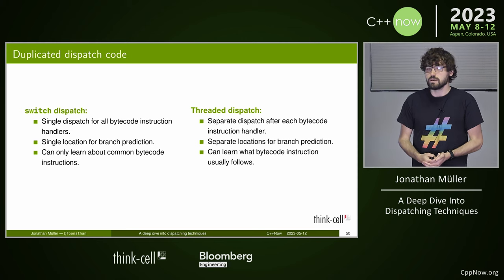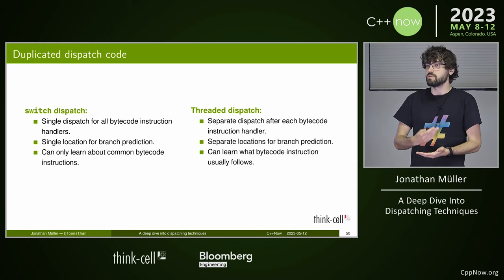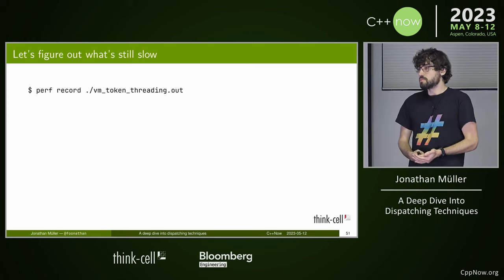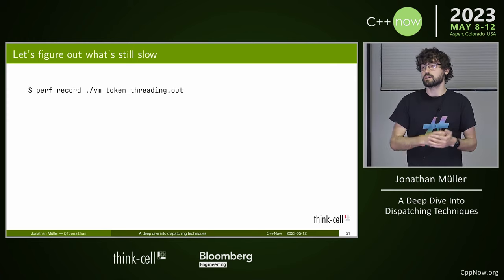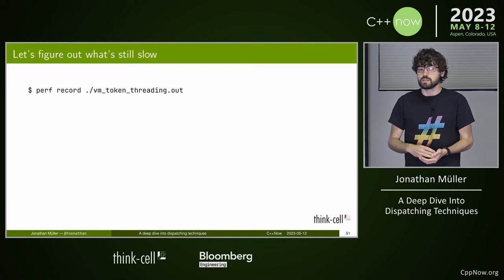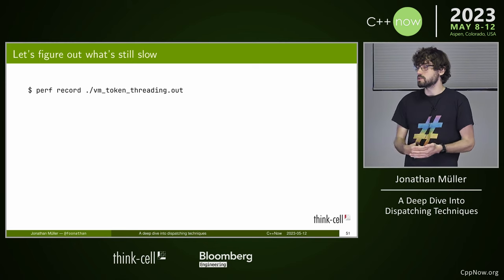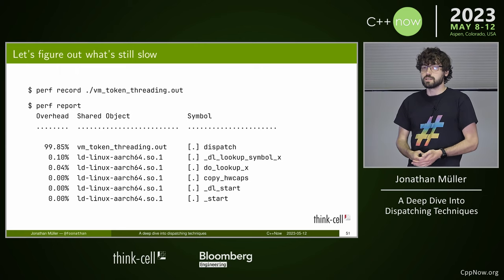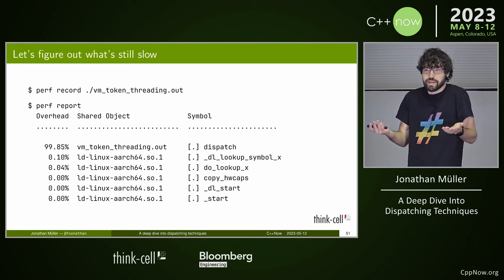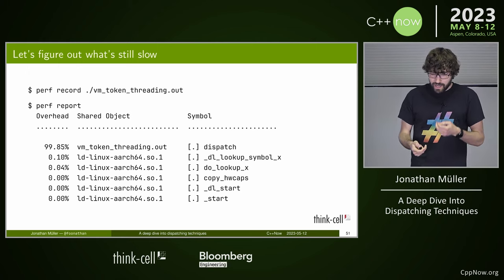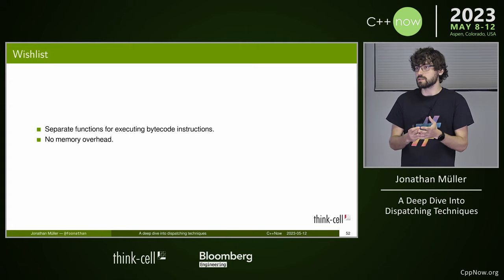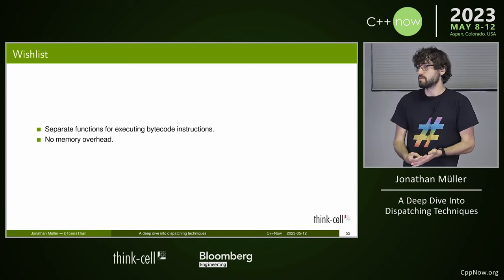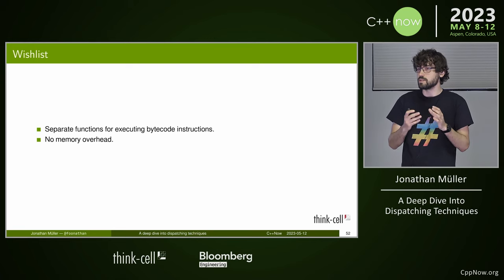We've made it twice as fast — but let's say that's still too slow. How can we make it even faster? Using perf record, we can see we spend 99.85% of runtime in the dispatch function, which is correct but useless — we don't have any other functions. Ideally, we'd want separate functions for a more detailed breakdown. If we used function pointers we'd get that, but we don't want memory overhead. Can we combine both techniques? Yes — using tail calls.